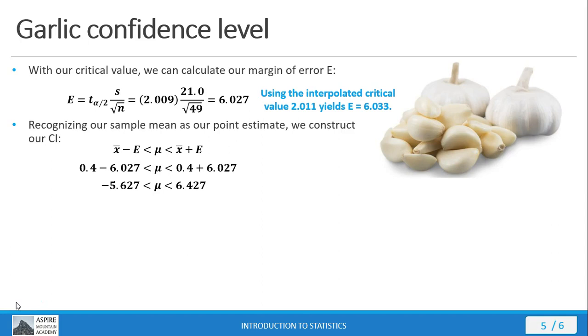Some students get a little excited about the negative sign on the lower limit, wondering if they did something wrong. No, we didn't do anything wrong. That's just where the confidence interval lies. If we use that interpolated more exact value for our CI, we get negative 5.633 to 6.433, so again a slight minor difference. If you're not going out that far with the decimal point, for all practical purposes that approximated value does pretty well on its own. This is our 95% confidence interval estimate.